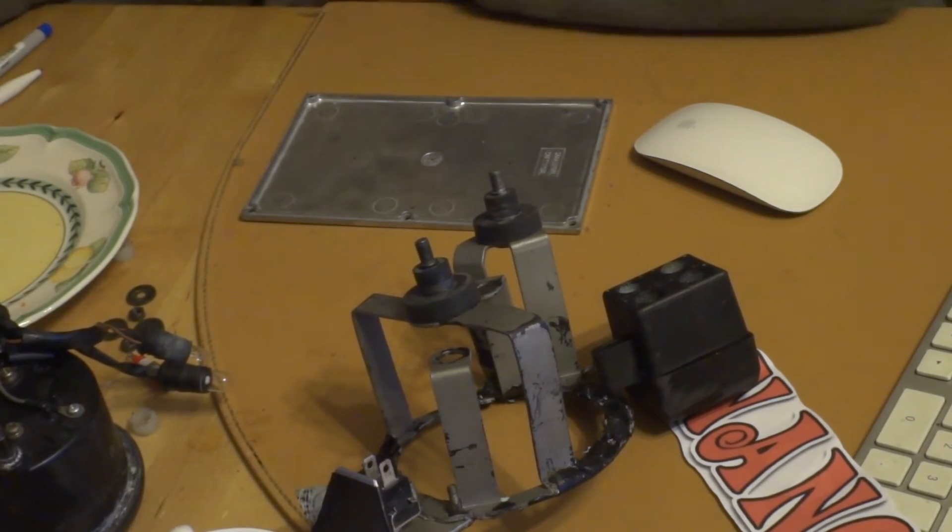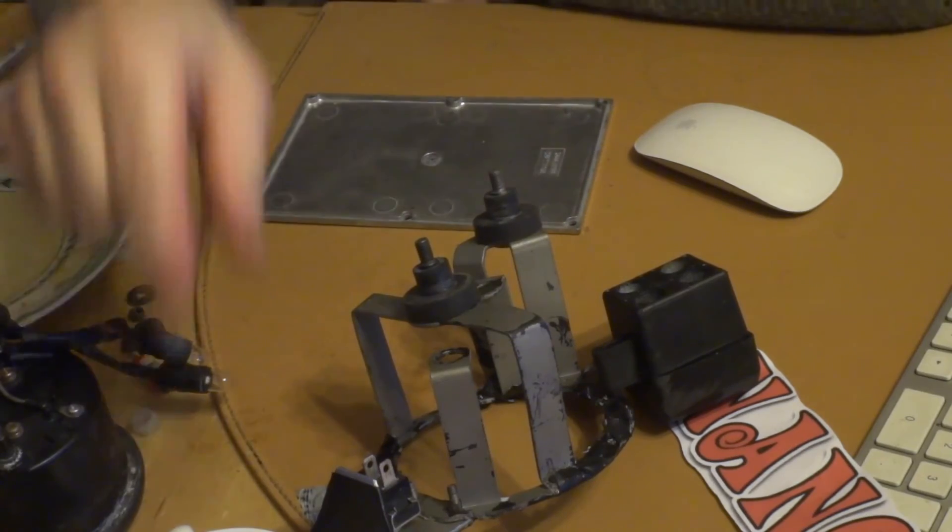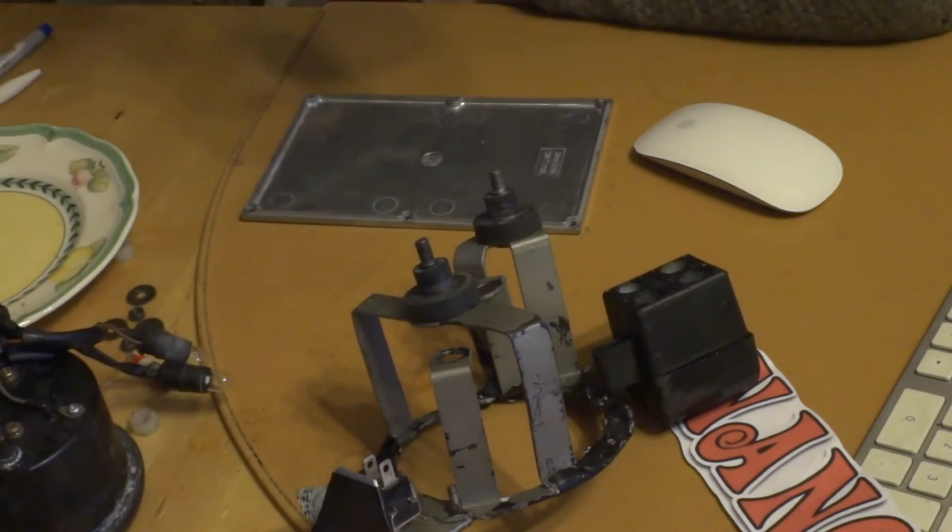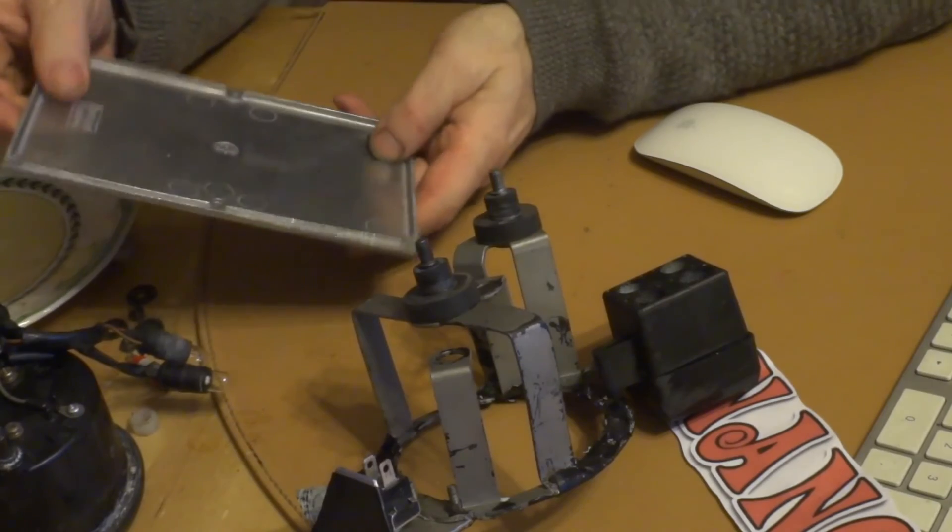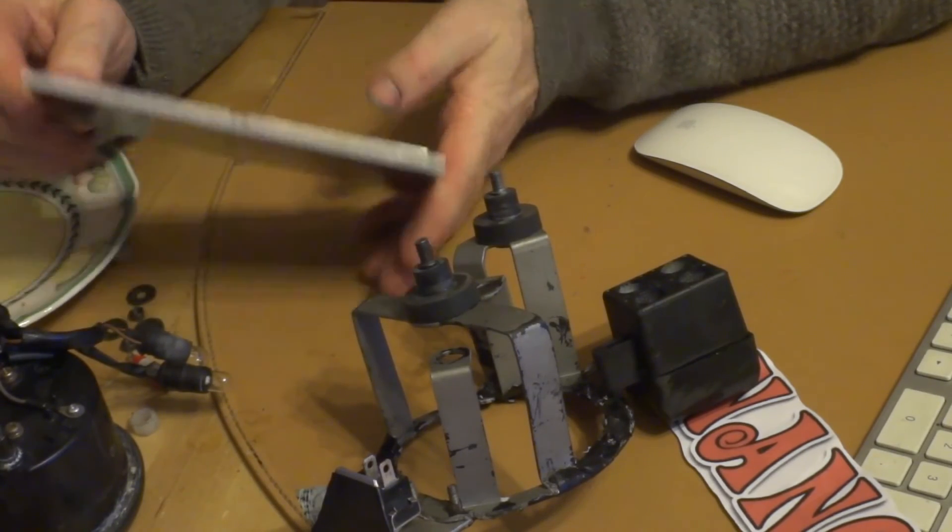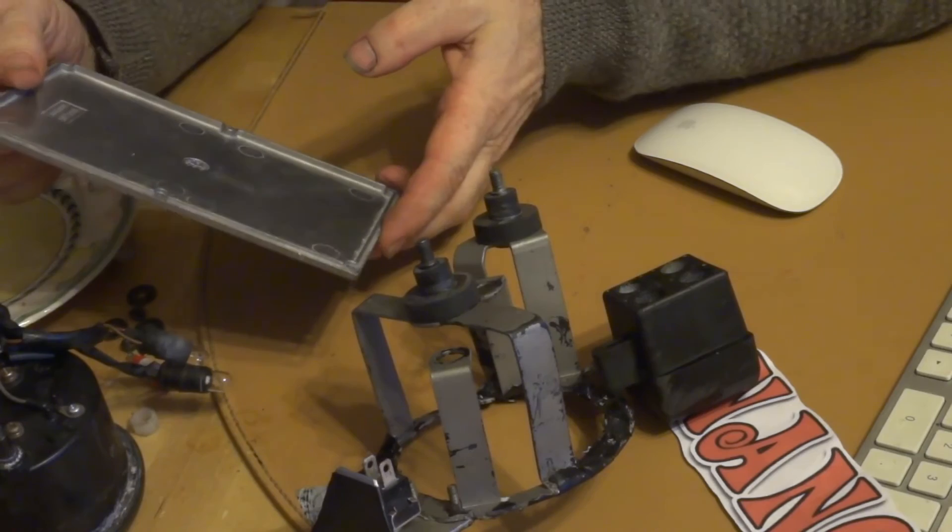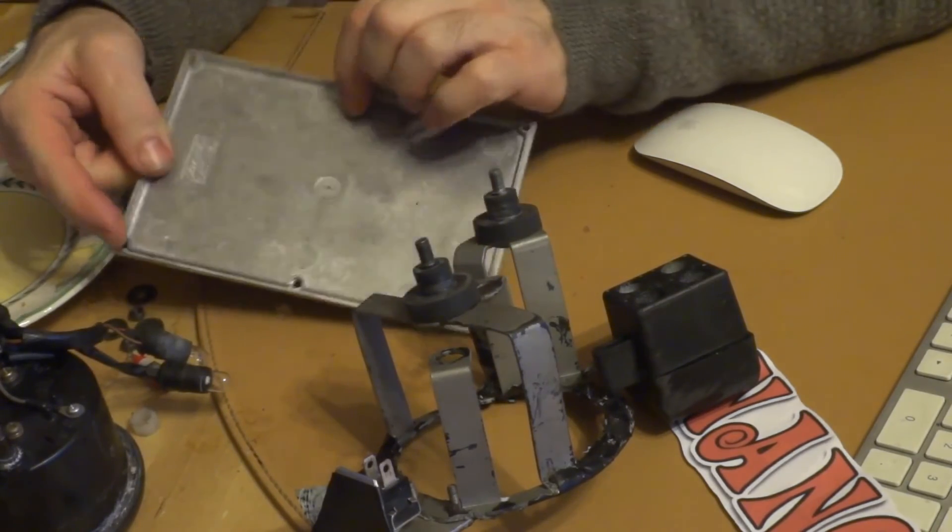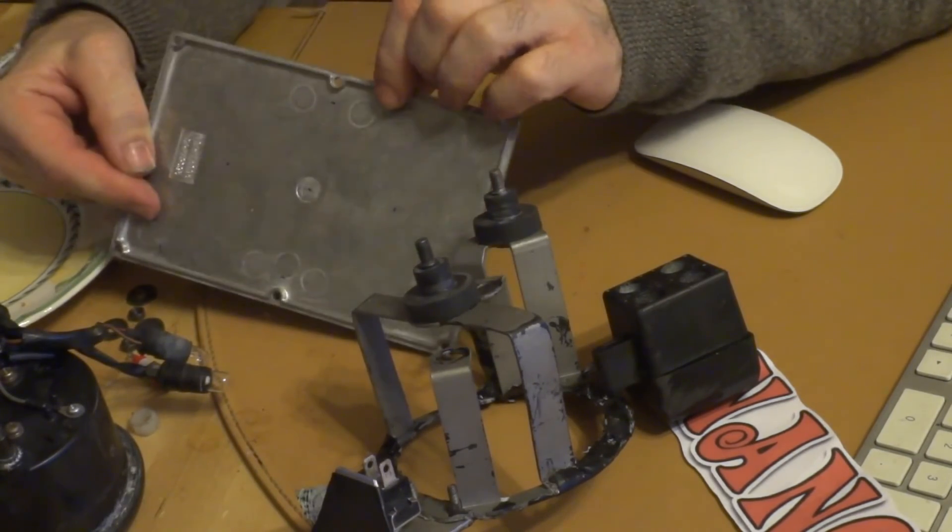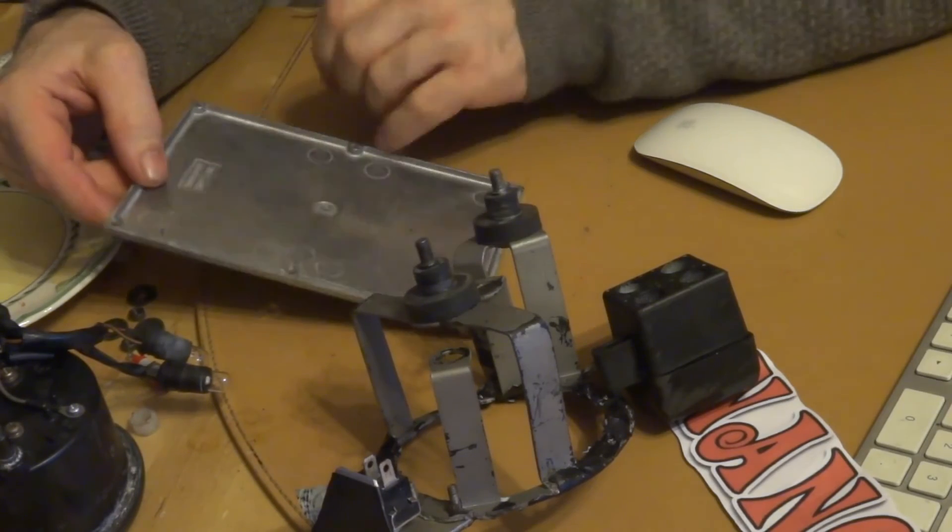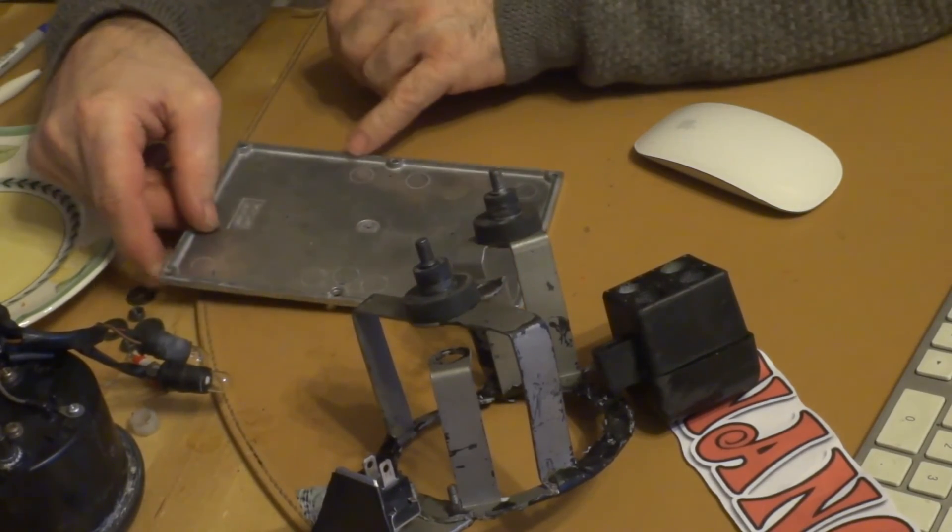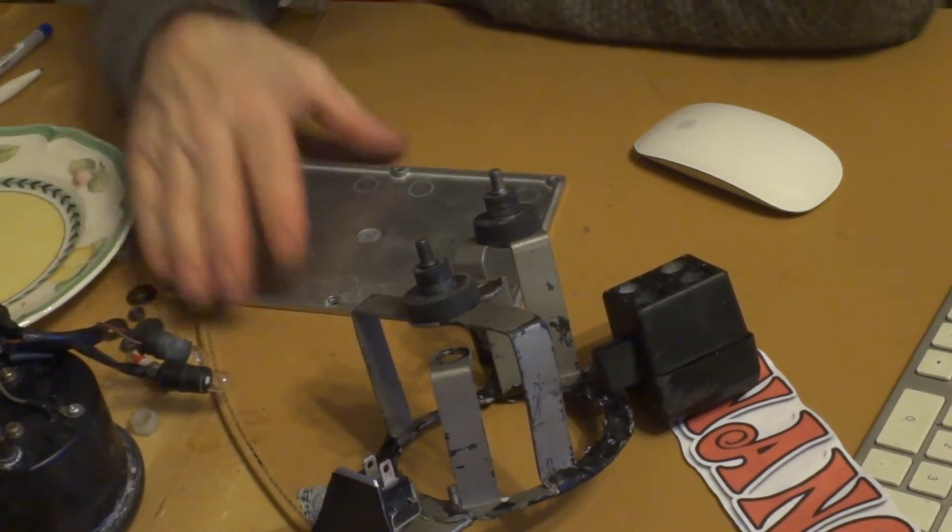This is one of the advantages of working in the kitchen. With it being die cast, you have to be reasonably careful with it when you try to cut it because it has a habit of fracturing. It's not like aluminium plate, which is a bit more malleable. This is quite delicate really in some sense. It's very light.